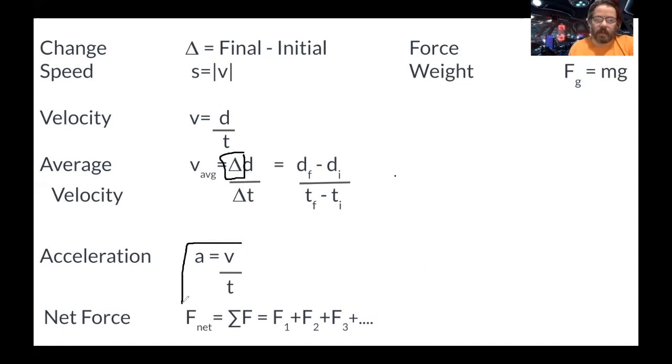So acceleration, a equals velocity divided by time. We can also have, you don't have to write this one now, but we can have an average acceleration, which is delta v over delta t, which is velocity final minus velocity initial divided by time final minus time initial.